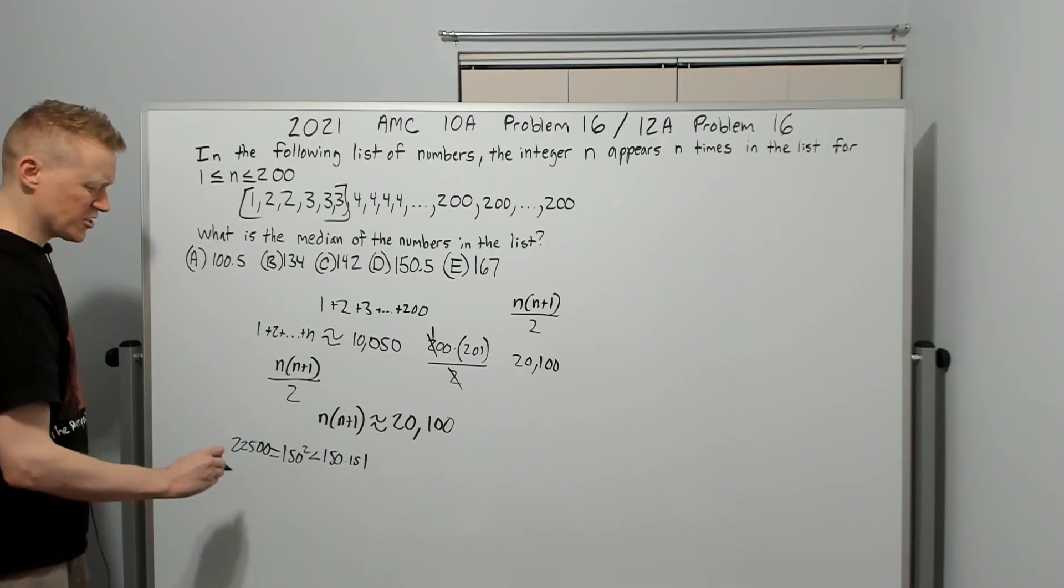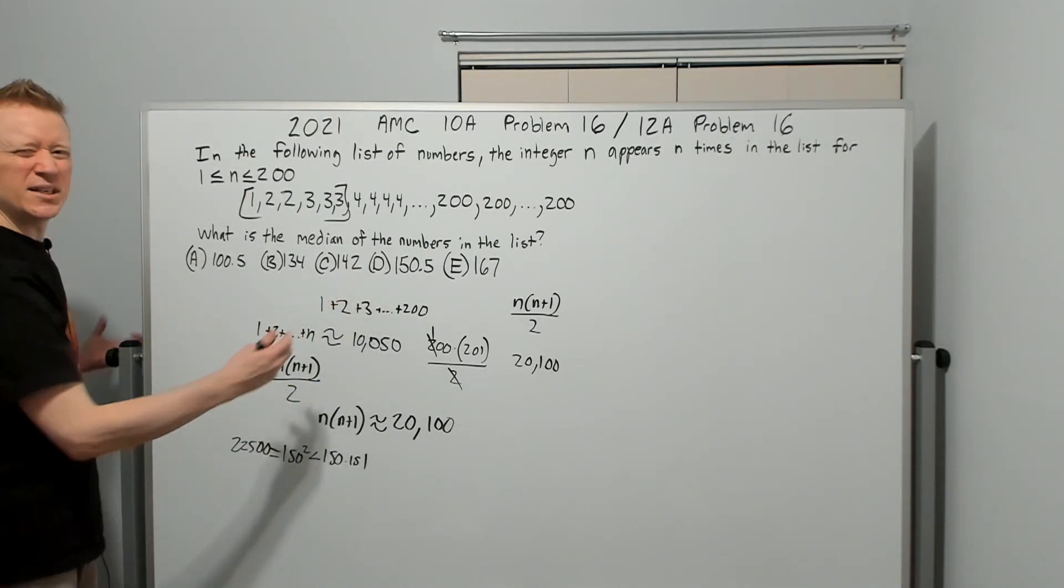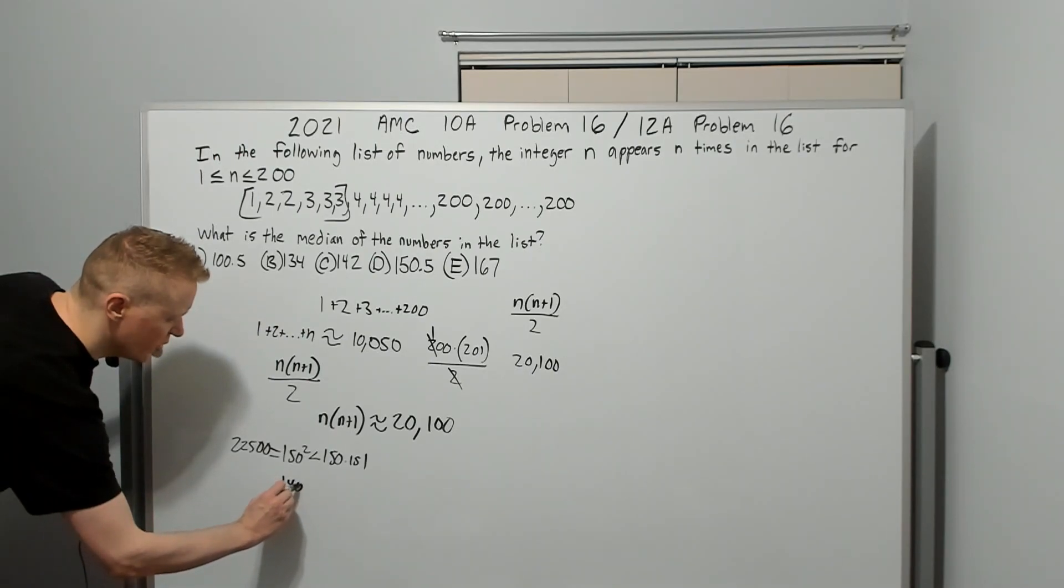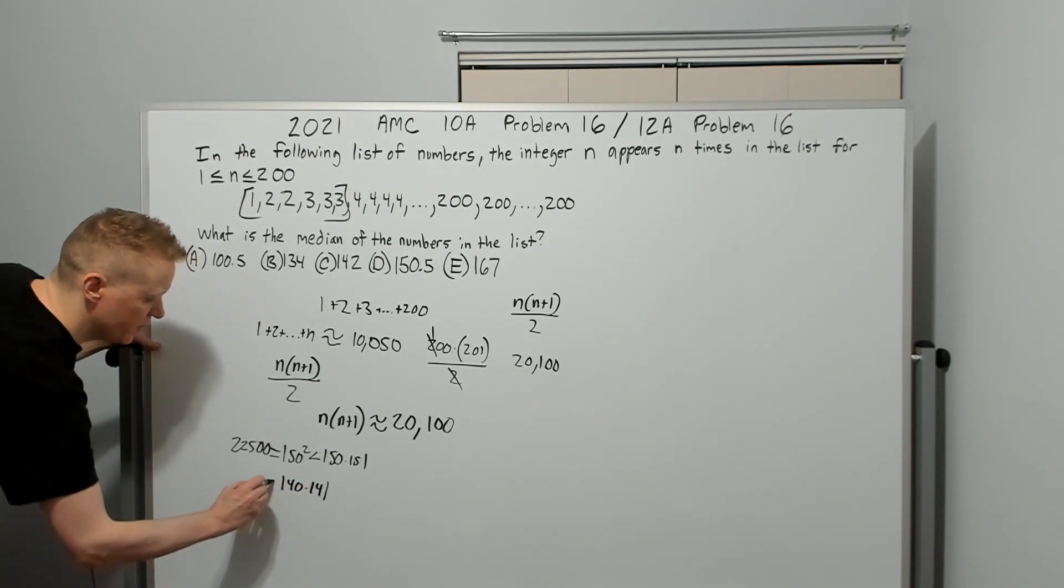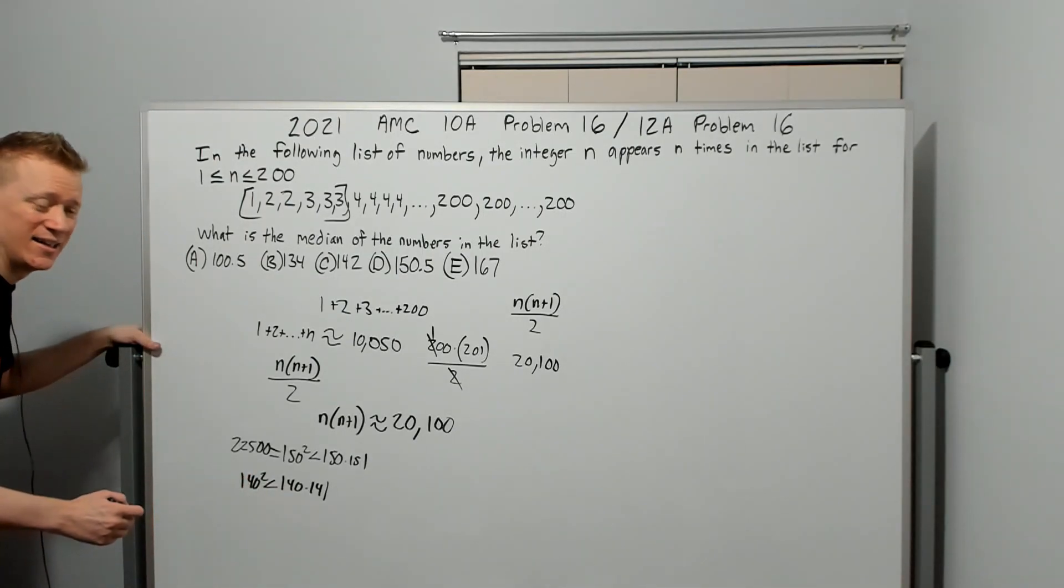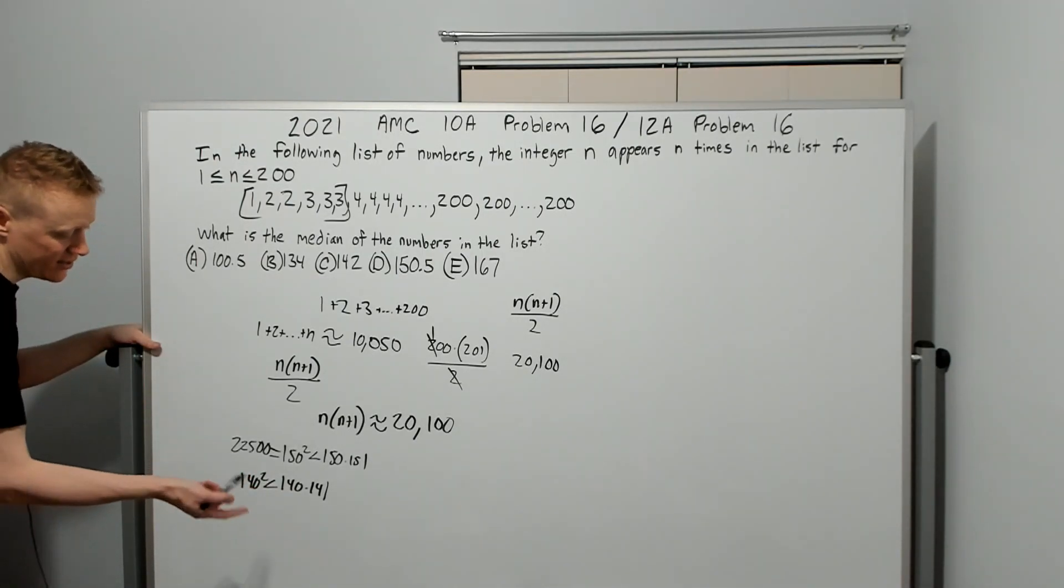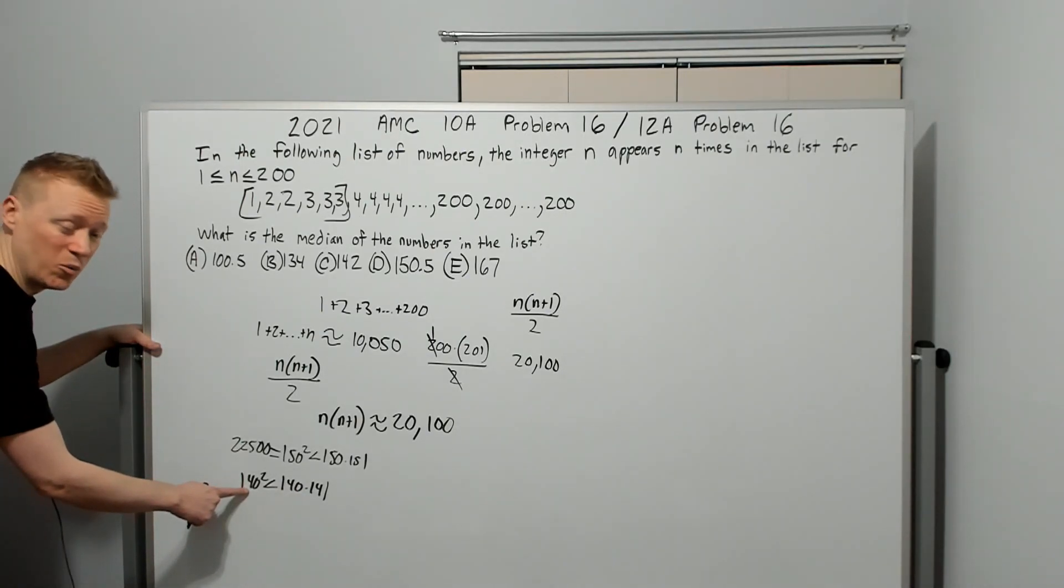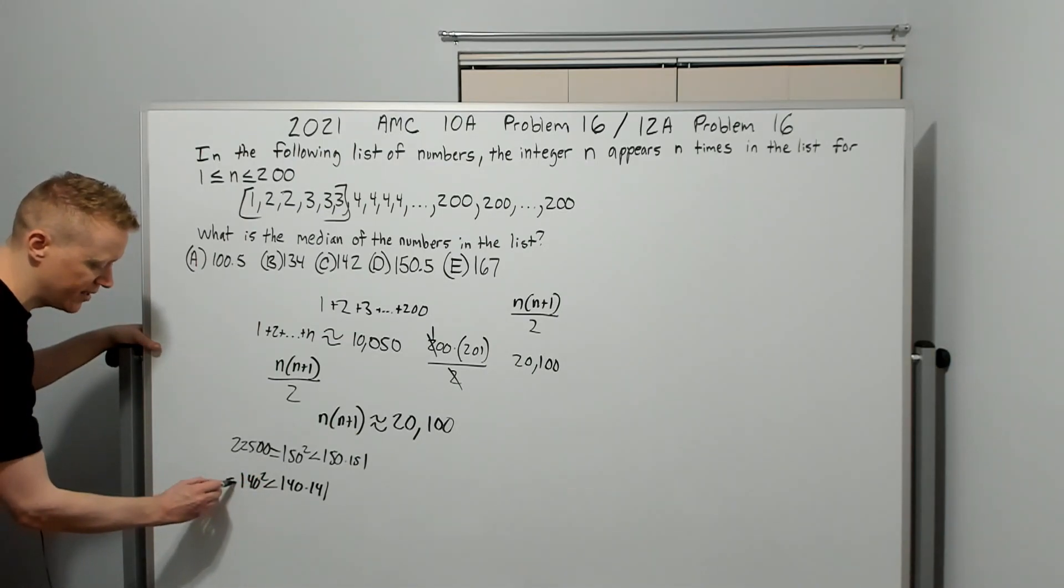Let's try something smaller. Instead of 142, let's use 140. We'll do 140 times 141, but 140 squared is less than that and easier to calculate. We've been on this path before. So 14 squared is 196, toss two zeros on the end—